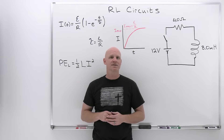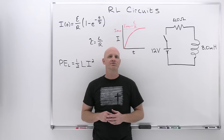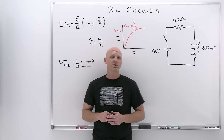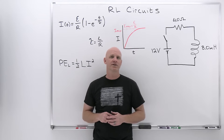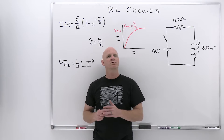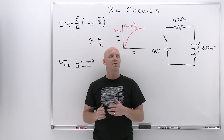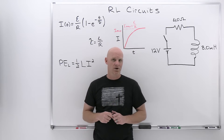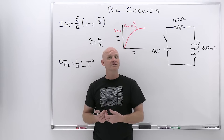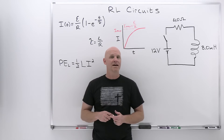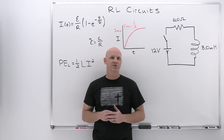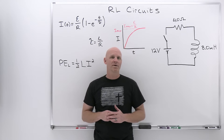RL circuits are going to be the topic of this lesson in my new general physics playlist, which when complete will cover a full year of university algebra-based physics. In this lesson we're going to deal with circuits that have both resistors and inductors, similar to how we talked about RC circuits a few chapters ago. We'll talk about the time dependence of the current in an RL circuit, and briefly about the potential energy stored in an inductor. My name is Chad, and welcome to Chad's Prep, where my goal is to take the stress out of learning science.